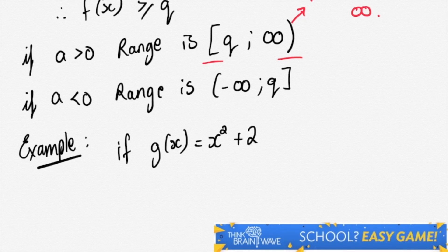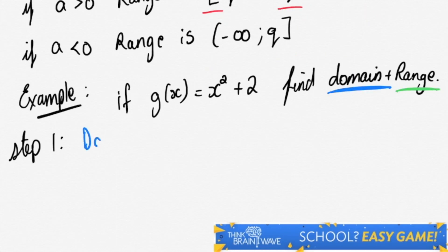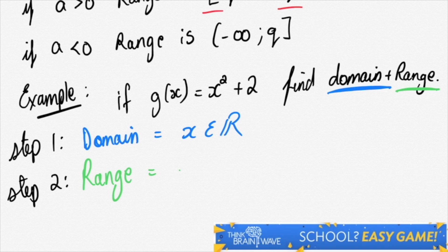Let's do an example. If g(x) is x² + 2, let's find the domain and the range. Step one: we find the domain. We say that for all values of x, the answer would be real. Because if you put any number that's positive or negative, if you square it out, like you can see above, the answer will be positive.